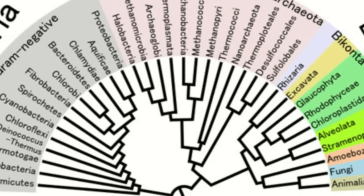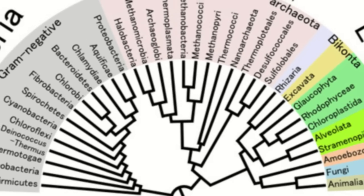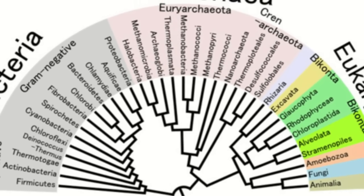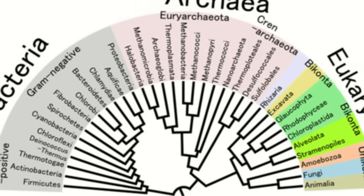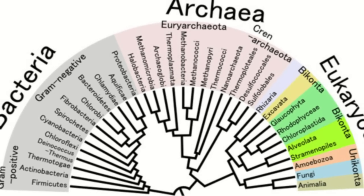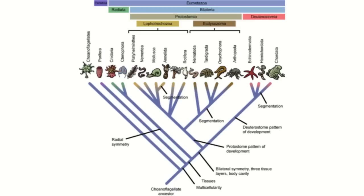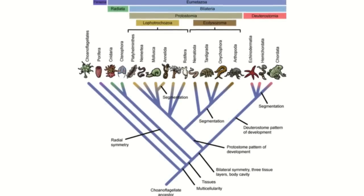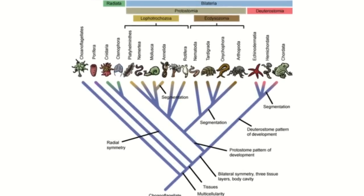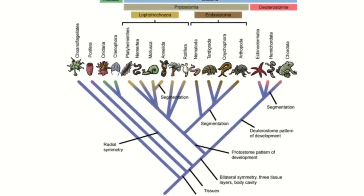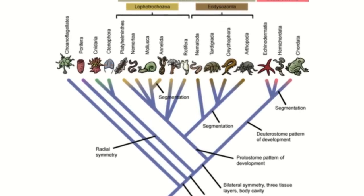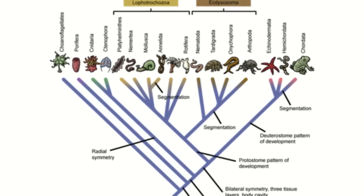The idea that all life on Earth is somehow related, albeit distantly, is known as the theory of common descent. In the modern synthesis of the theory of evolution, it is the mechanisms of random mutation and natural selection which have manifested these increasing chasms between species.